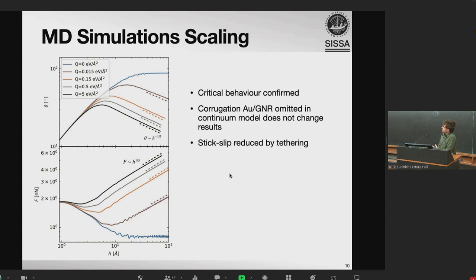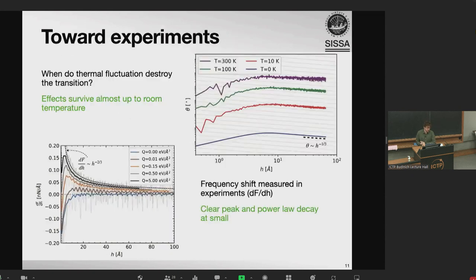So confirming the simulation, we can wonder if this could be seen experimentally. And the first thing that we need to check is whether temperature changes the picture considerably. And we see that these effects should survive almost up to room temperature according to finite temperature simulations. So we see here that at zero temperature, as before, the critical exponent is clear and it should survive somewhat up to room temperature. Between 100K and room temperature, it's still clearly observable, this scaling of the bending angle.